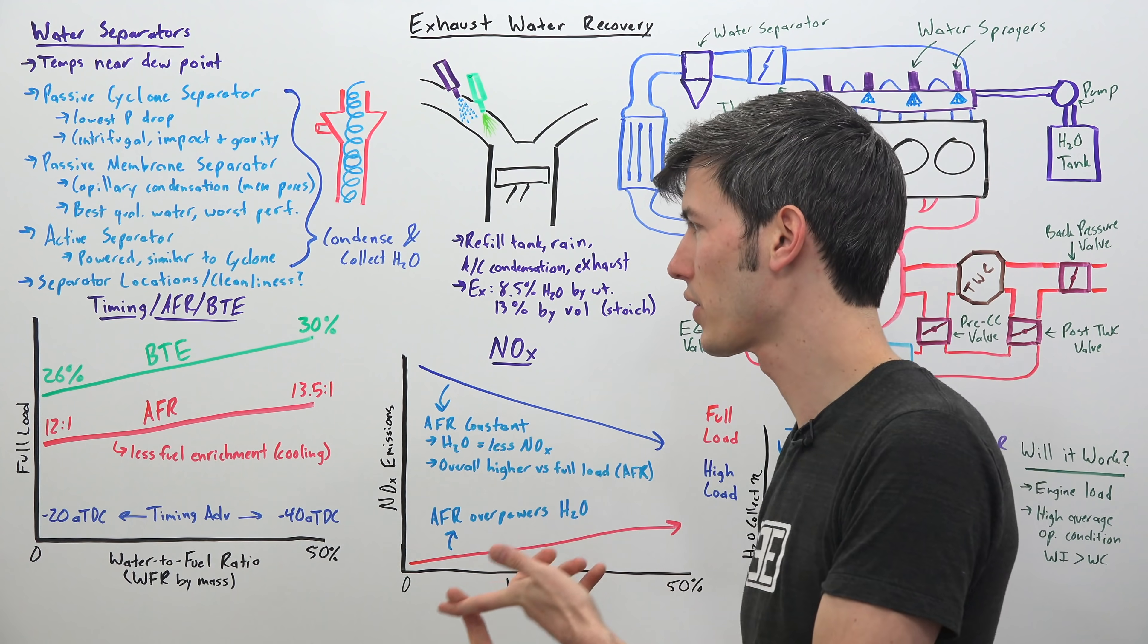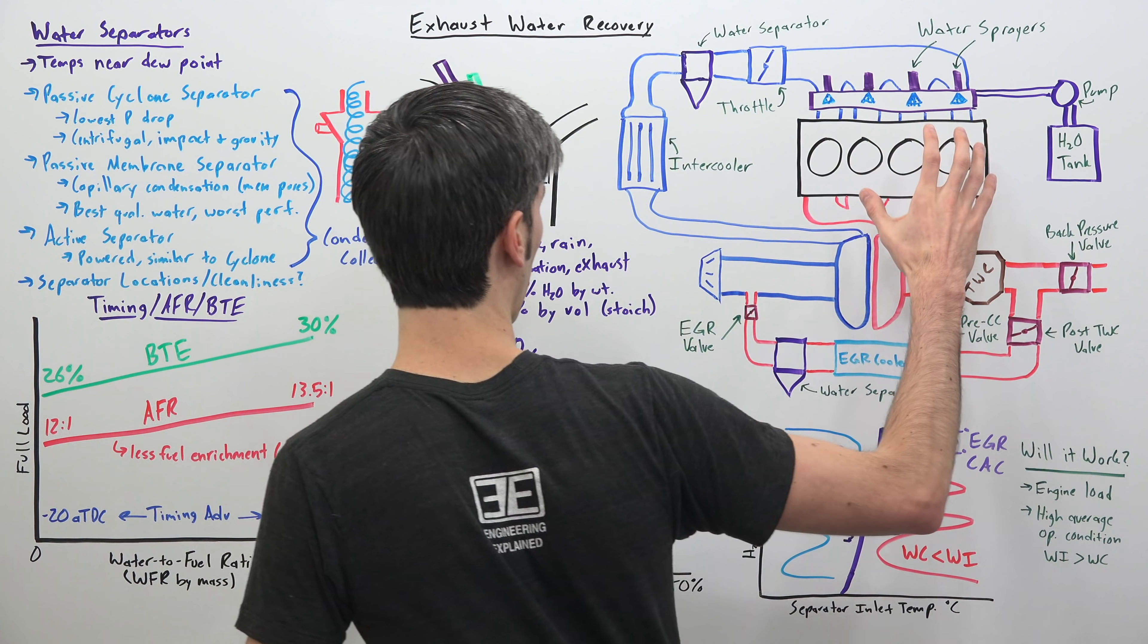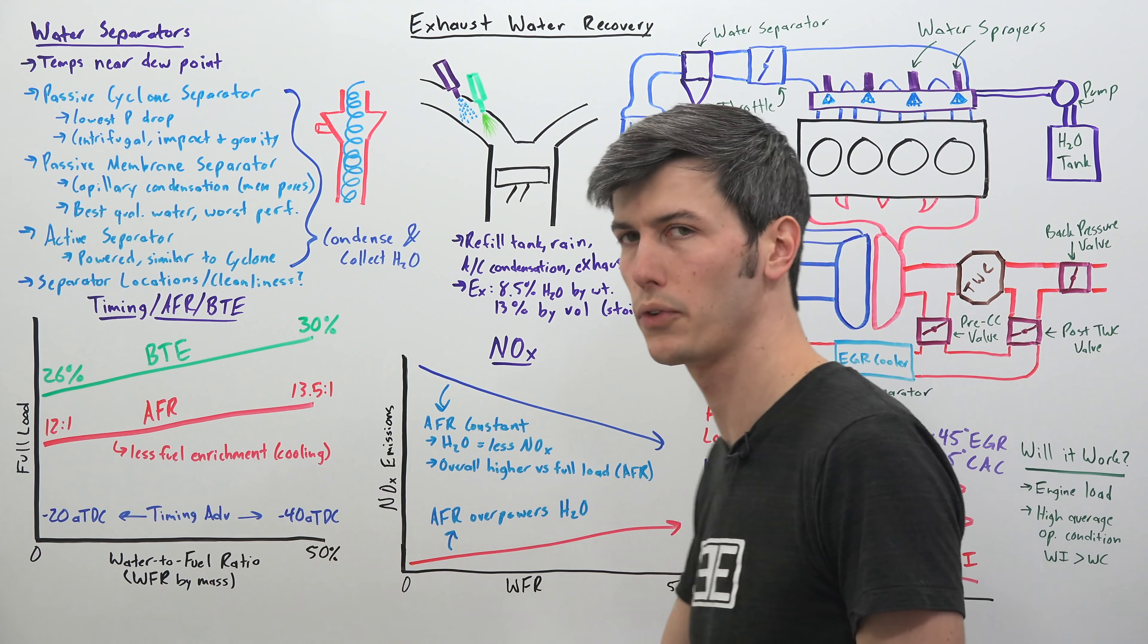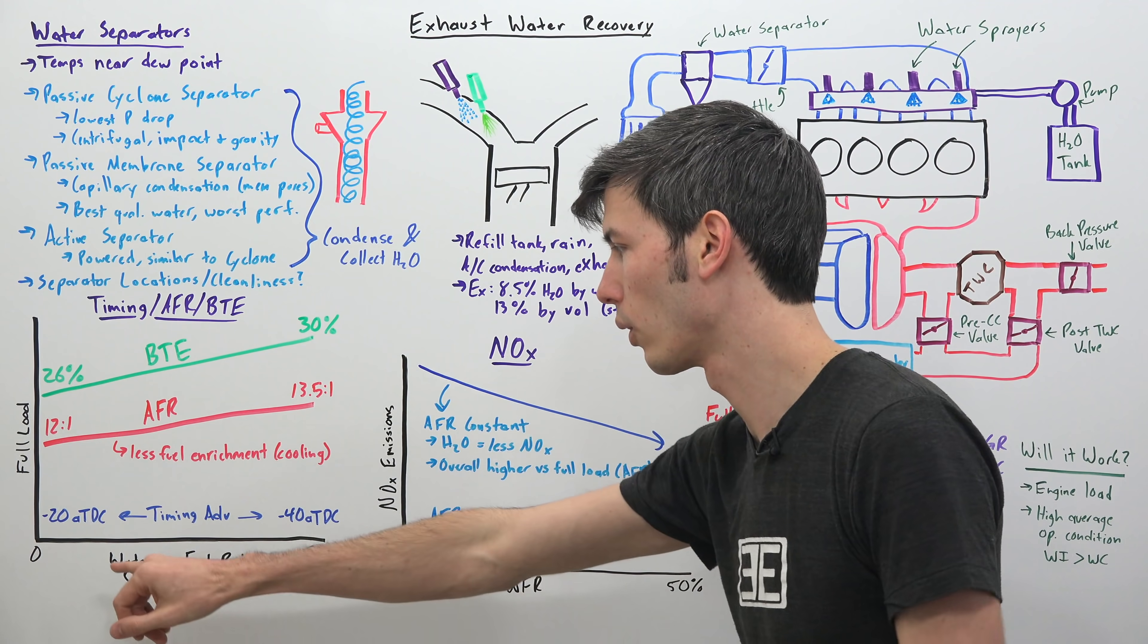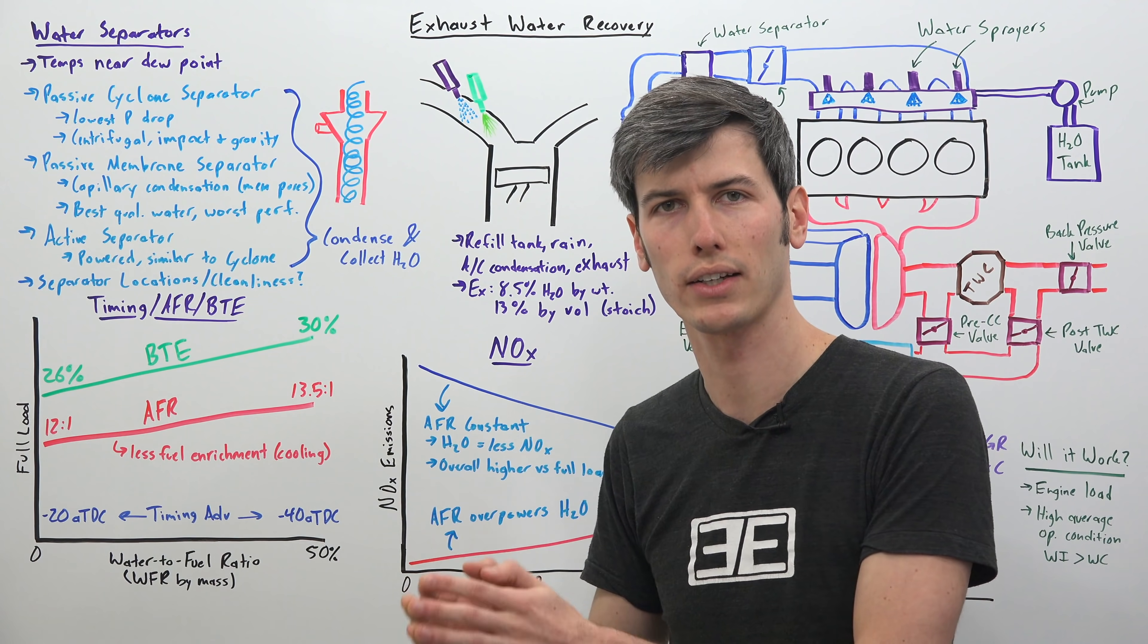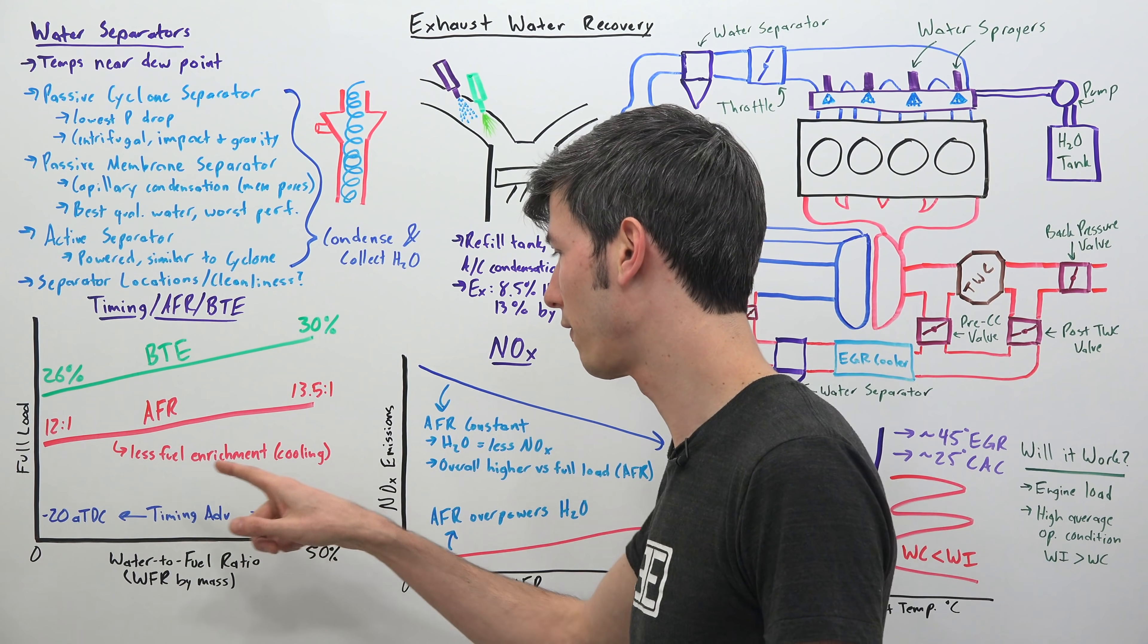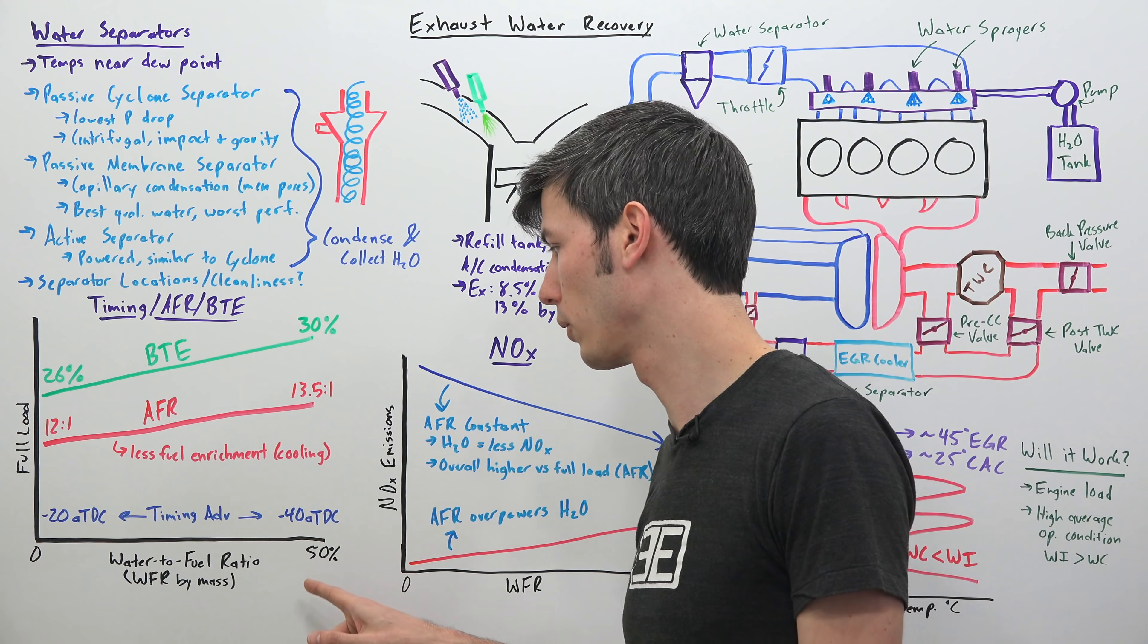Now let's get into the effects on ignition timing, on air fuel ratios, and on brake thermal efficiency of using this water injection system. So they were looking at data on this two liter turbocharged engine and when operating at full load meaning a hundred percent throttle, what they found - so we're looking at varying the water to fuel ratio. So a ratio of how much water is injected to how much fuel is injected by mass. So zero meaning you're injecting no water whatsoever. Fifty percent meaning take however much fuel you're injecting you're injecting half that much in water into that intake manifold. And so what they found is at full load they could advance the timing a further 20 degrees when they were at fifty percent water to fuel water injection.